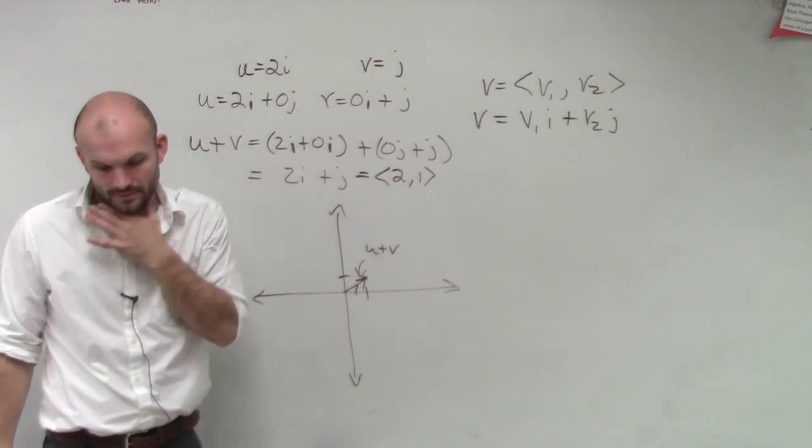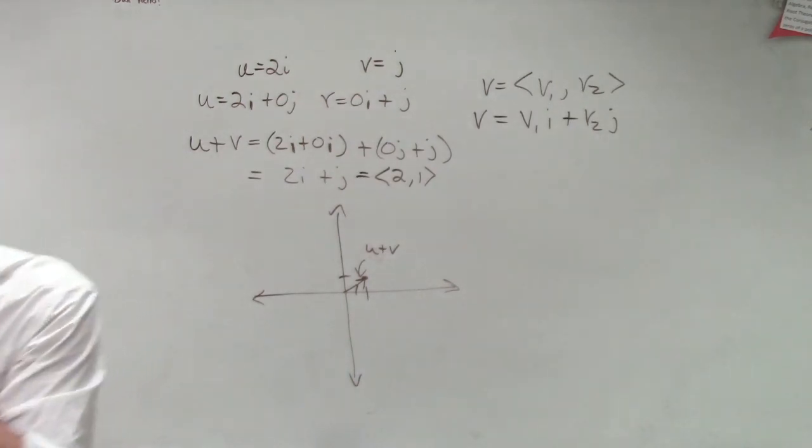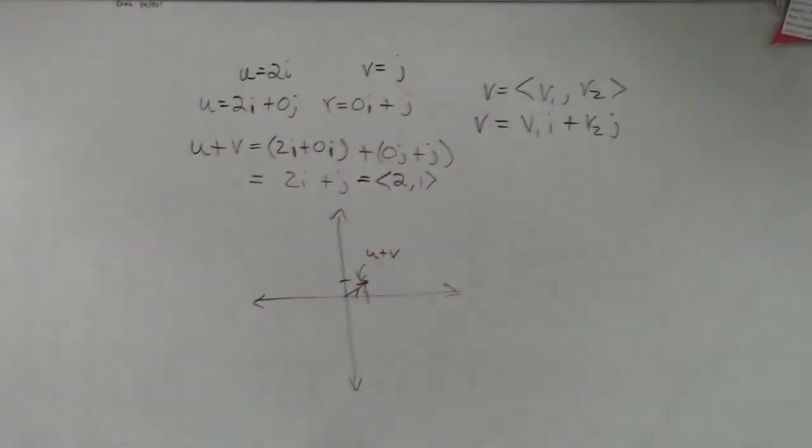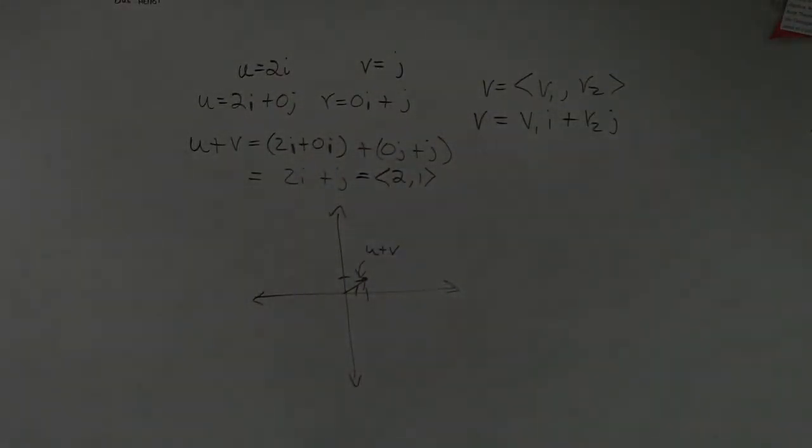I guess what I'm really not understanding is if it's supposed to be a coordinate point, why is there a plus sign instead of a comma? It's a linear combination of the two unit vectors.